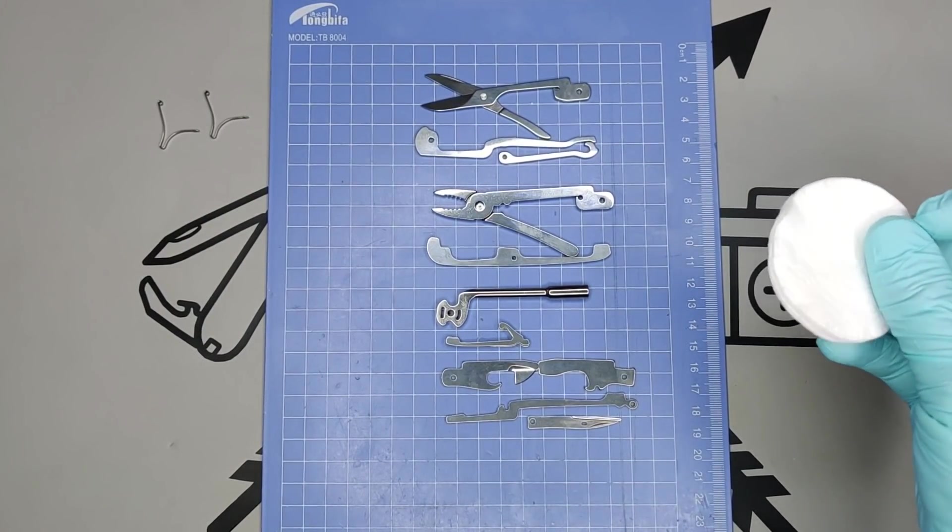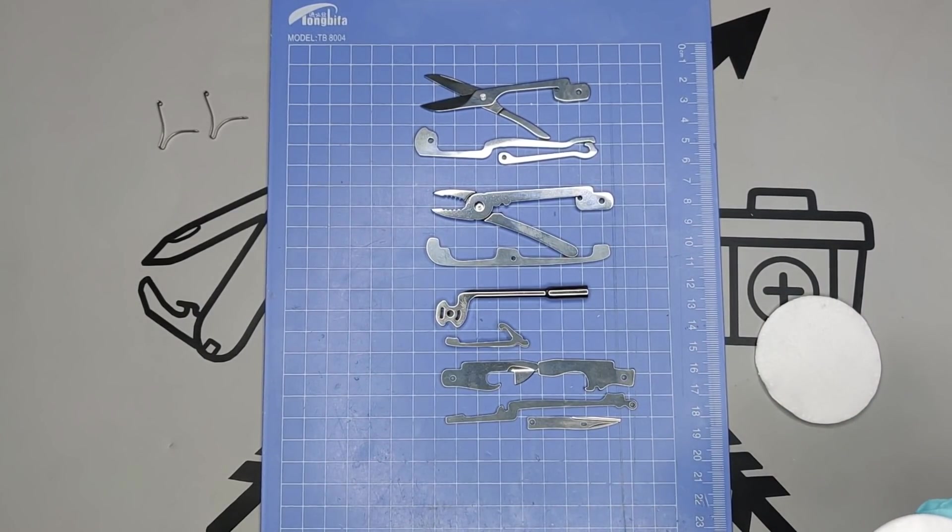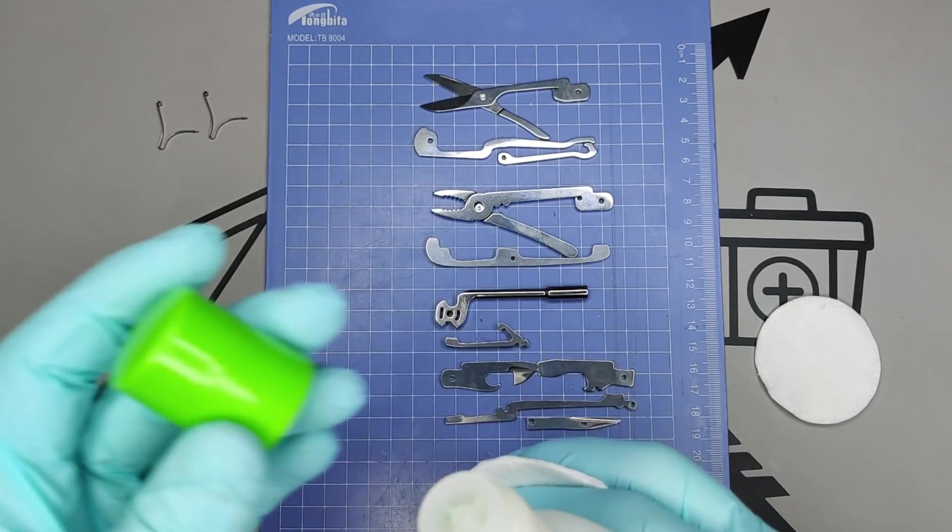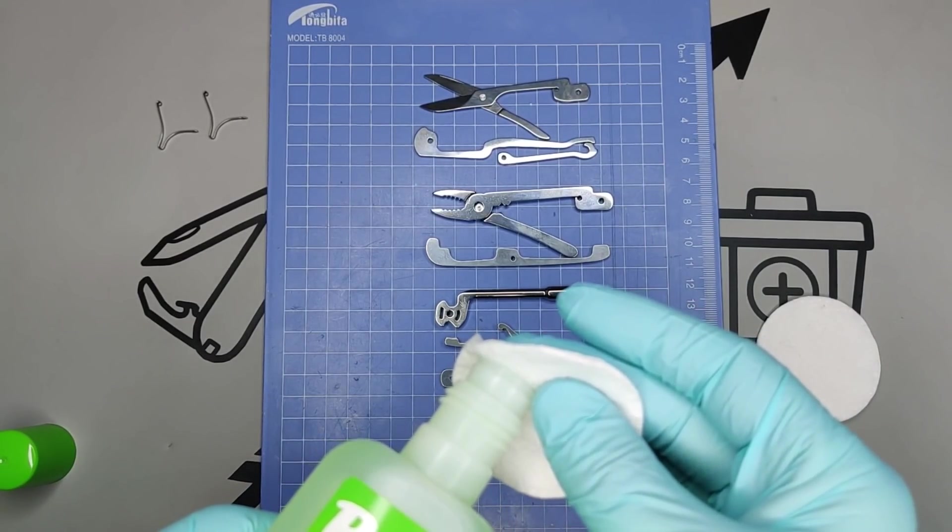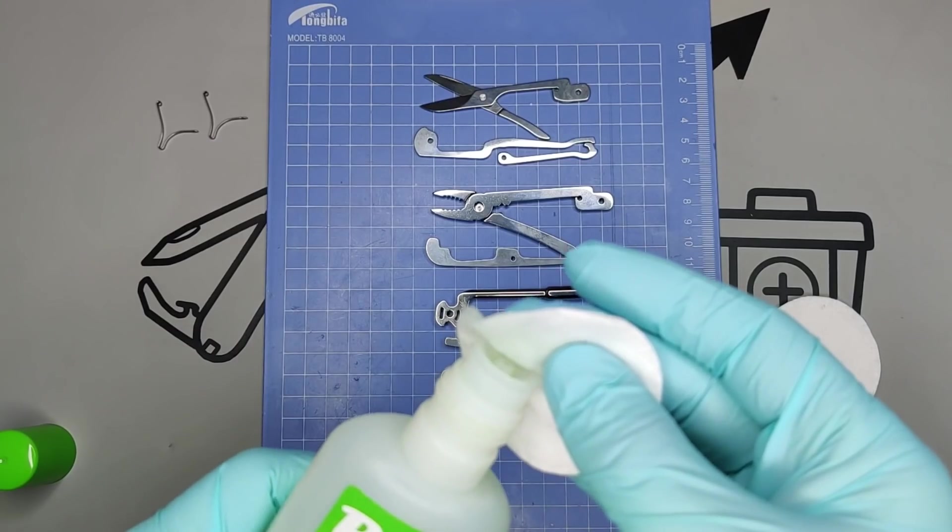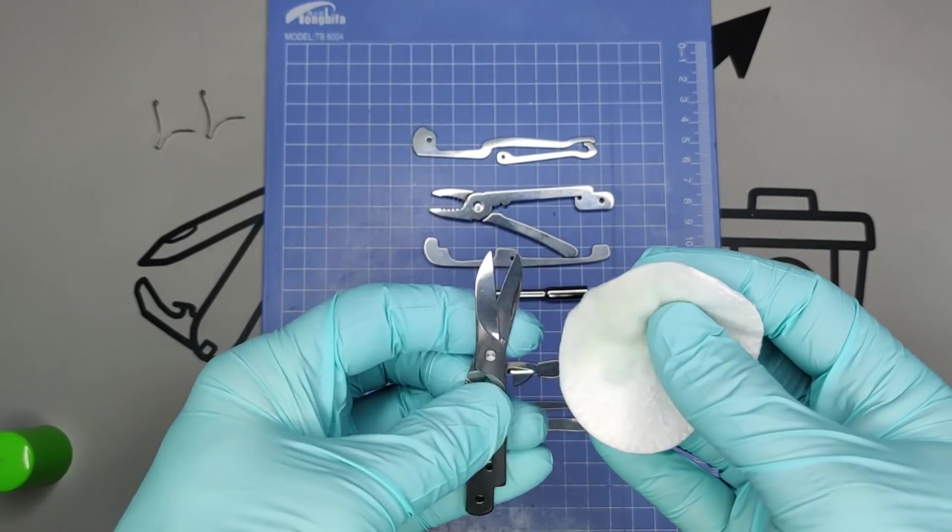So usually what I do is I'll just use a little cotton ring here and some fingernail polish remover. It's just for degreasing, getting rid of all the fingerprints and whatever else has remained, preparing it for the acid etching.